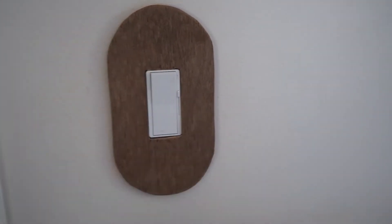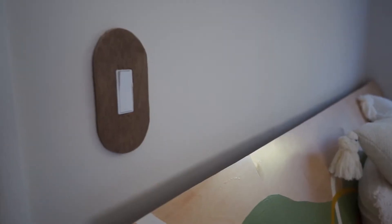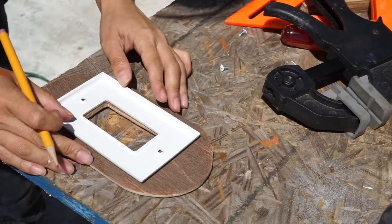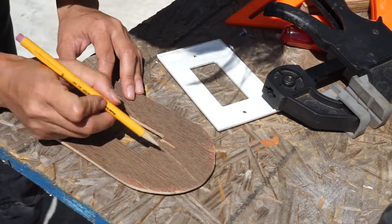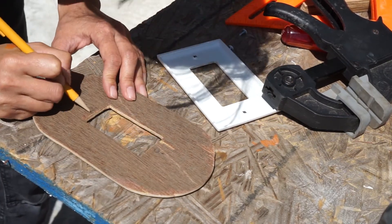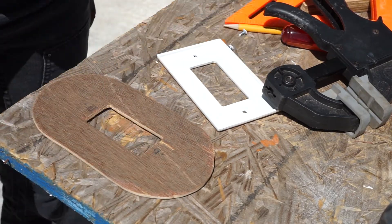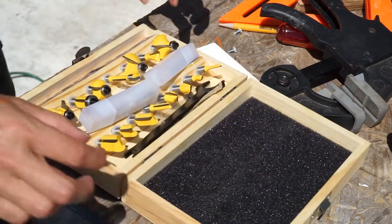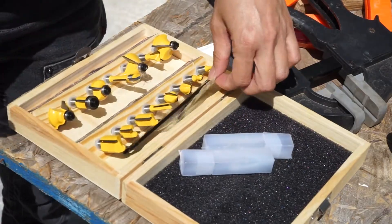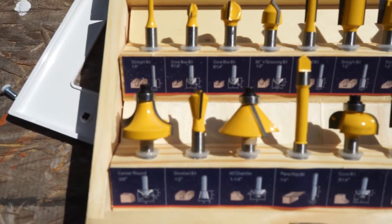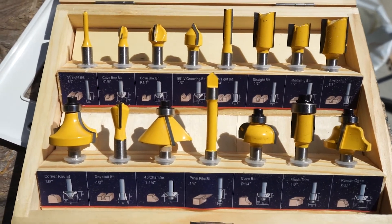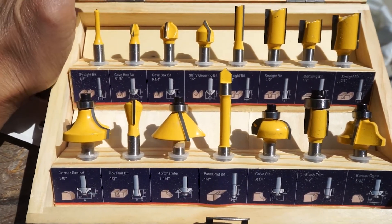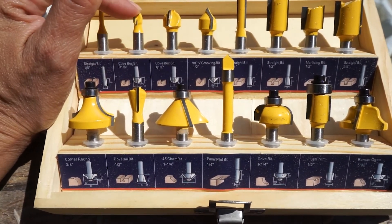However, I noticed that where the outlet cover was originally screwed in, there's a little lip. I wanted to grind that area out so it sat more flush into the wall, so I'm going to use my router.